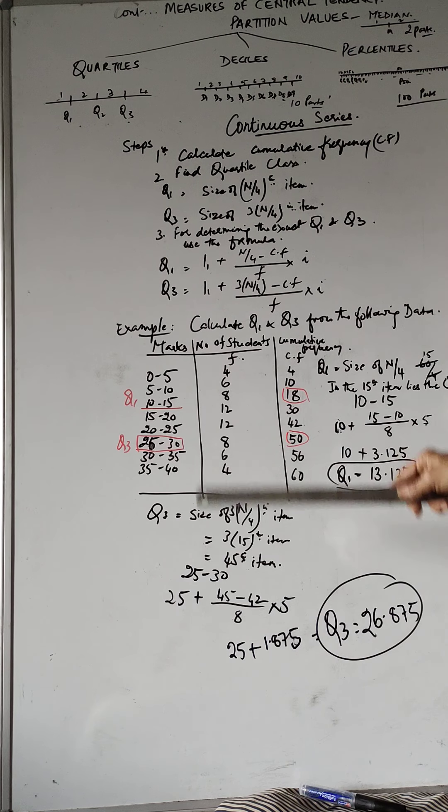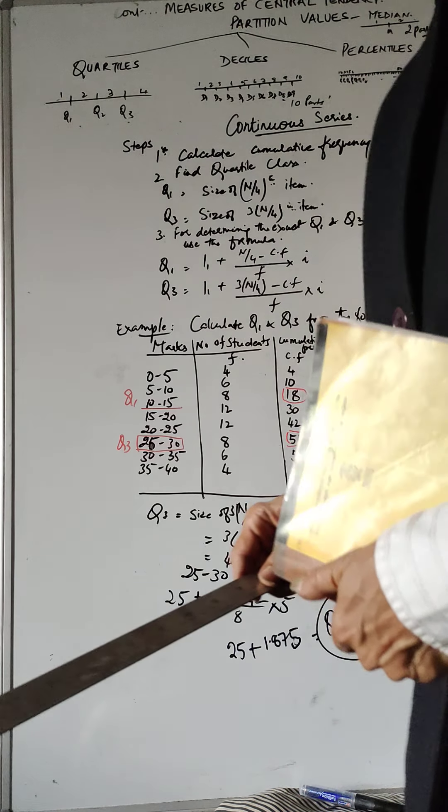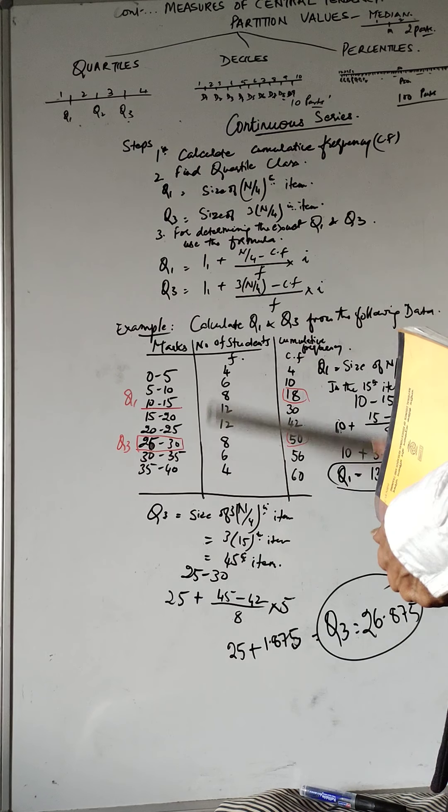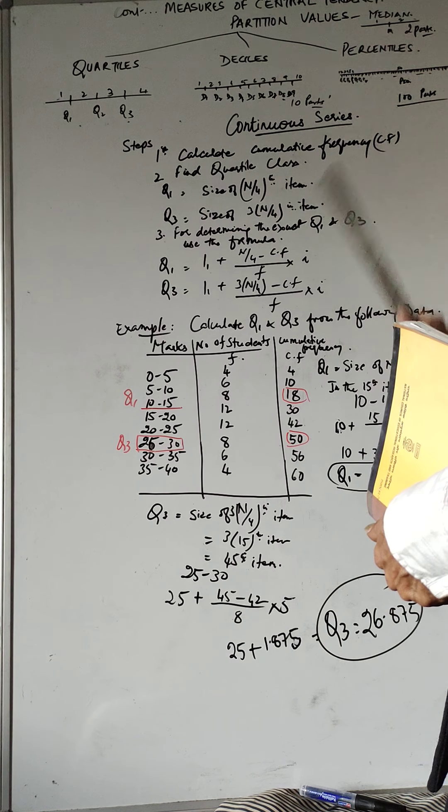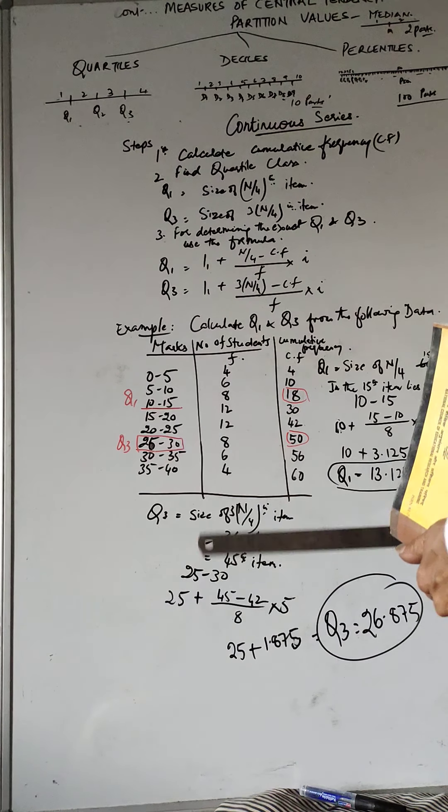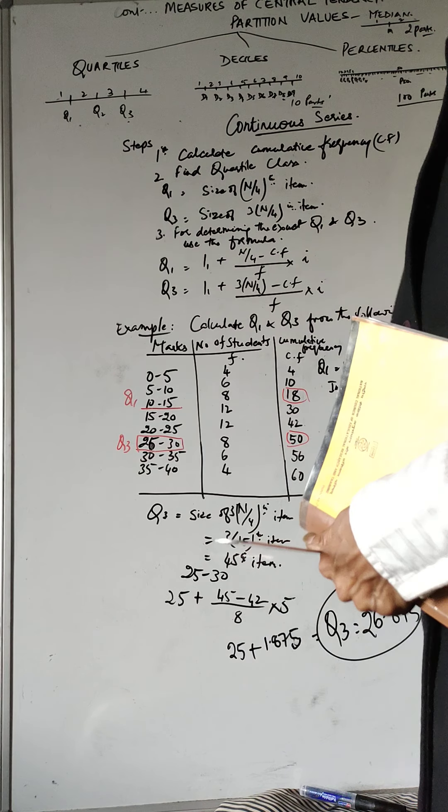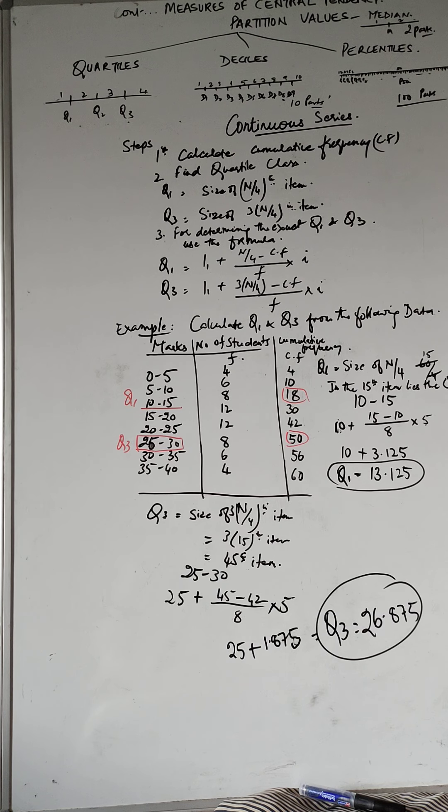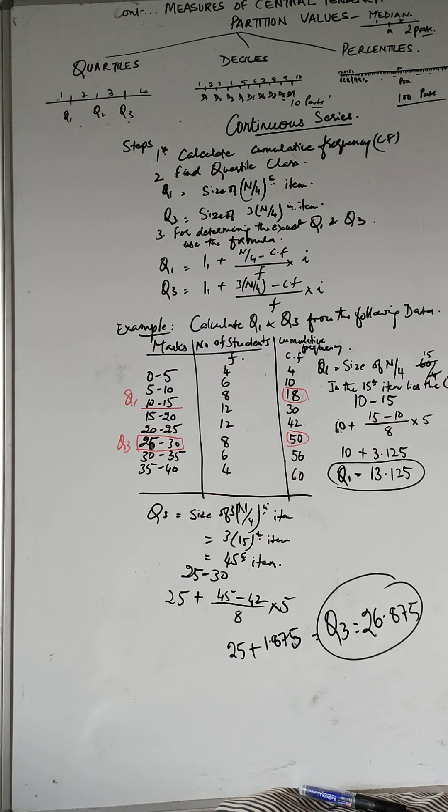So this is how we worked out the partition value. This is the third quartile. It's very important because then we will do the interquartile range and all when we are doing dispersion later on. But right now, just to know what is a partition value of Q1 and Q3. Maybe in another numerical, I'm going to do one of the deciles so that we know what it is. Please again, let me just repeat that you must do this example and you do an illustration from your book. So with that, we come to a close. In the next class, I'm doing continuous series for deciles.